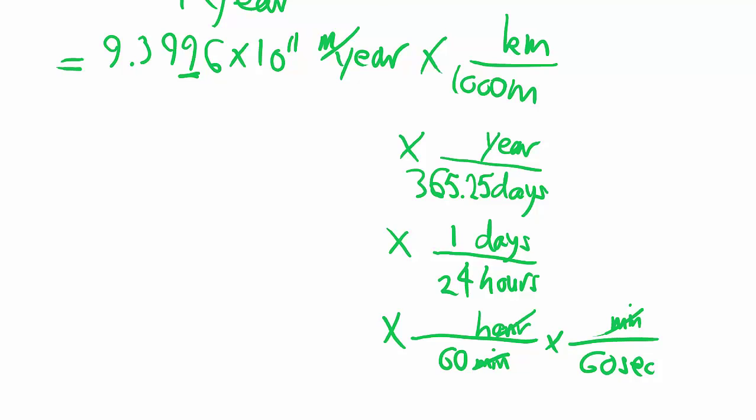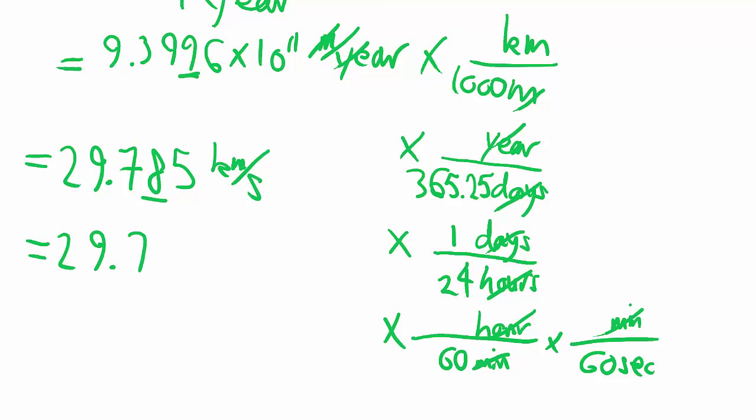So all these unit crosses out, something on top crosses with something on the bottom, and we're left with kilometers per second. Big long chain of calculator work, you'll find that you'll end up with 29.785 kilometers per second, again keeping the foresight fixed. So the actual answer would be 29.79 kilometers per second.